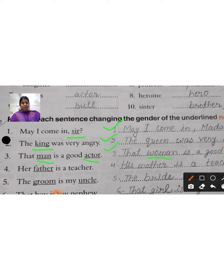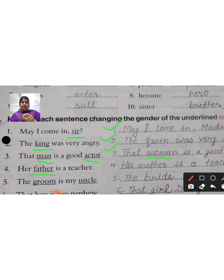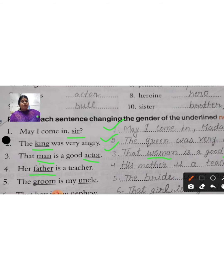Now sentence number four: 'Her father is a teacher.' Her father — her pitaji — is a teacher. Now you have to change here. Father becomes mother, and her becomes his — 'His mother is a teacher.' We changed 'her' to 'his' as well. So: 'His mother is a teacher.'